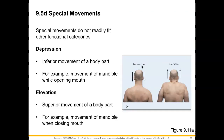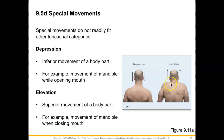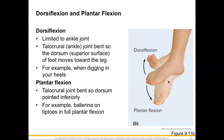Now for special movements that didn't fit into other categories — these only take place at specific joints. Depression is an inferior movement, such as moving the scapula down or opening the mouth by depressing the mandible. Elevation is the superior movement of a body part — elevating the scapula creates a shoulder shrug, and closing the mouth moves the mandible from an open to a closed position.